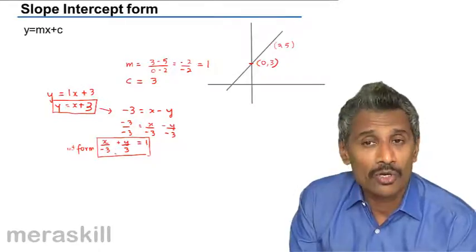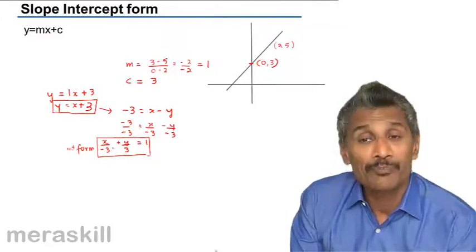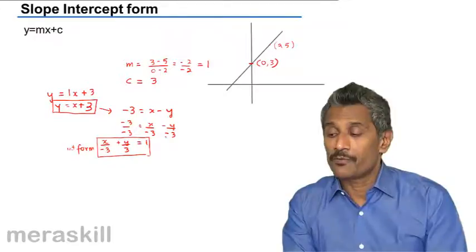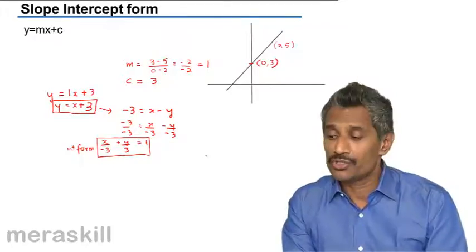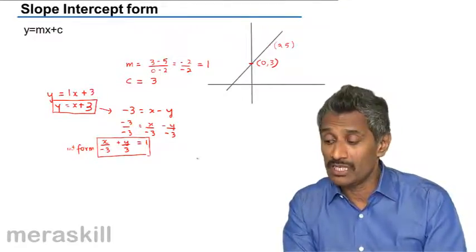Here, slope is not involved. It is x-intercept and y-intercept. So this is a slope-intercept form of writing equation of the line which intersects both the axes.